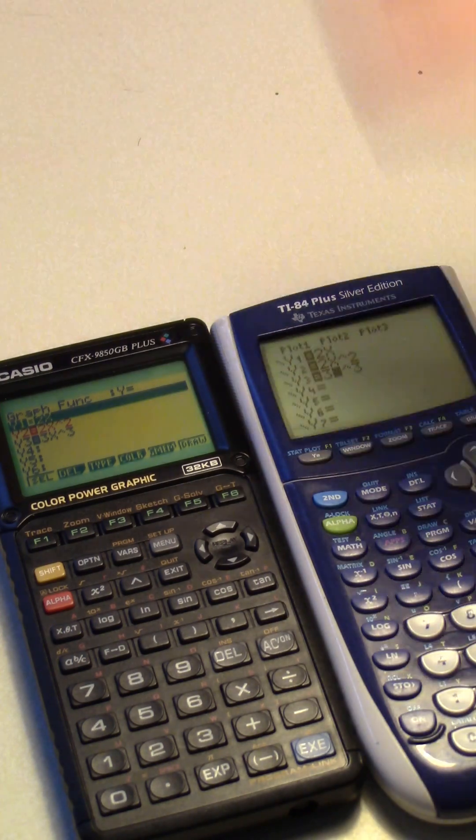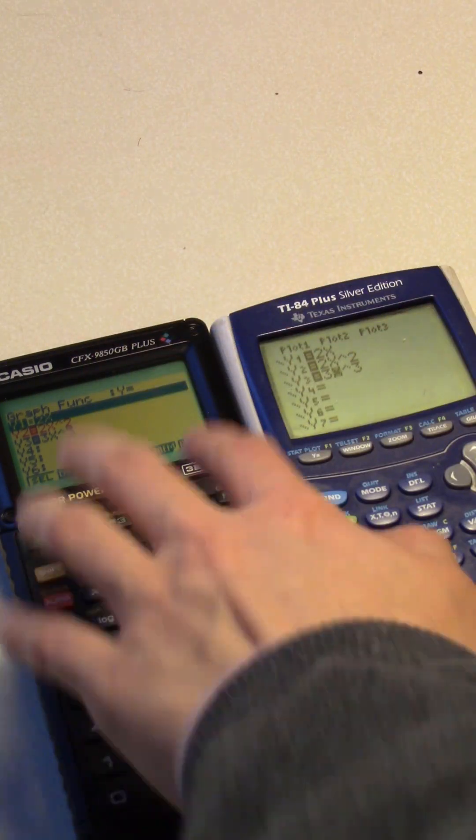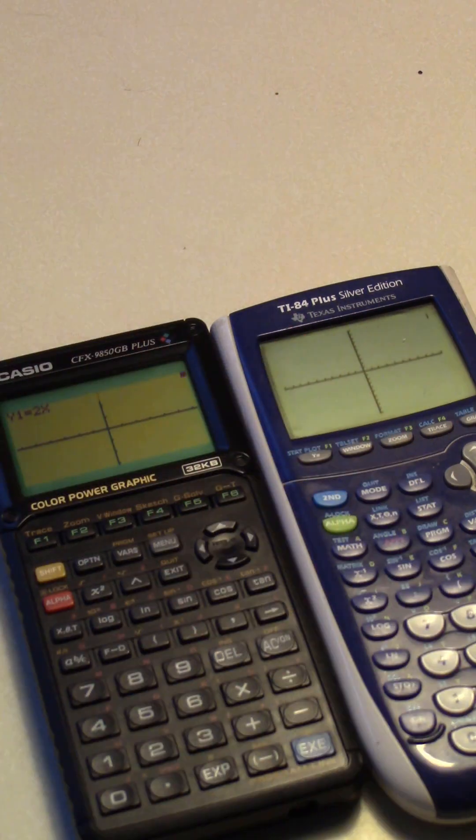So you're probably wondering, why don't I just ditch my TI-84 for an old Casio? Well, one thing to keep in mind is that the CPU in the TI-84 is about three times as fast.